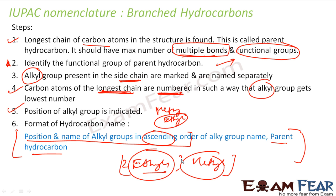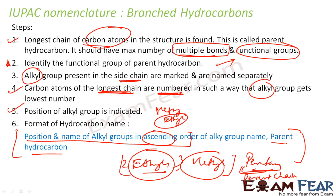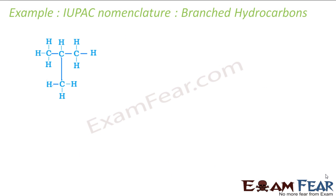So the format is: position and name of alkyl group in ascending order — in case you have multiple alkyl groups — comma, parent hydrocarbon. For example, it may be 2-ethyl, 3-ethyl, and some parent hydrocarbon like pentane or pentene, depending on whether there is a single or double bond. This is the critical naming format to remember.